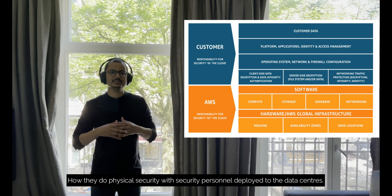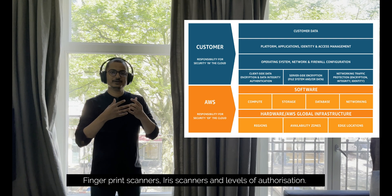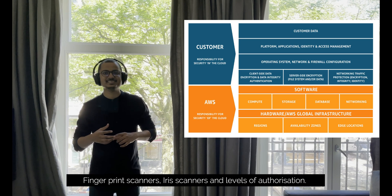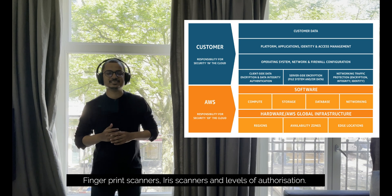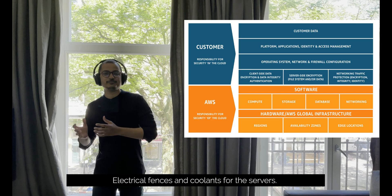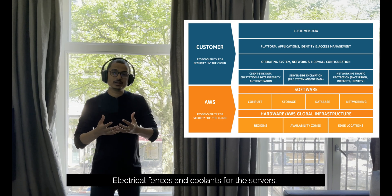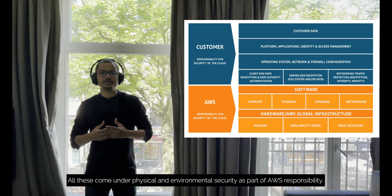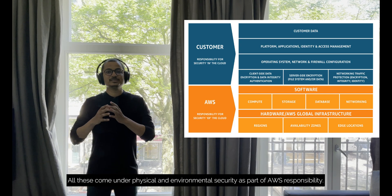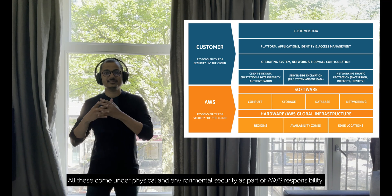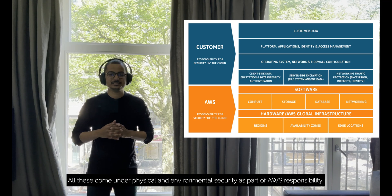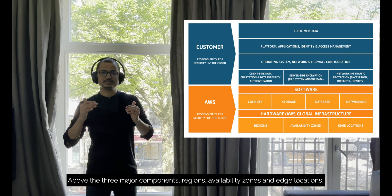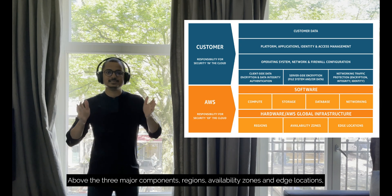For physical security, AWS uses fingerprint scanning, iris scanners, different levels of authorization, electrical fences, and coolants for servers. So AWS handles all physical and environmental security at the data center level. The three major components are regions, availability zones, and edge locations.